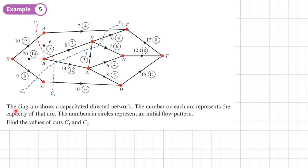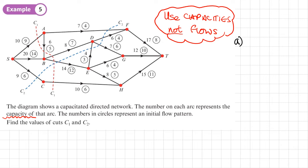Example 5, the diagram shows a capacitated directed network. The number on each arc represents the capacity of that arc. Numbers in the circles represent an initial flow pattern. Calculate the value of the cuts C1 and C2. So just a little reminder here that we use capacities, not flows. And I suppose the clue is here, it does say the capacity of that arc. So we're using the capacities.